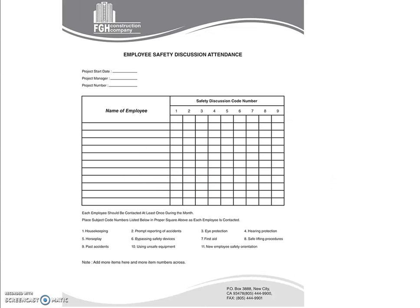Another form is the employee safety discussion attendance form. This form uses coding for different types of discussion topics, indicating which topic was discussed with which employee. The codes — for example, from 1 to 9 or more — can be related to different safety issues such as housekeeping, using unsafe equipment, first aid, and so on.